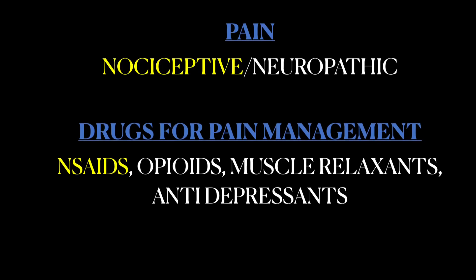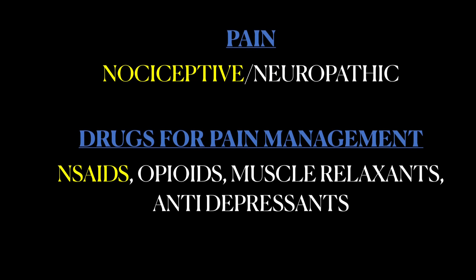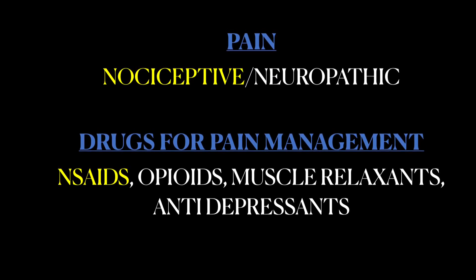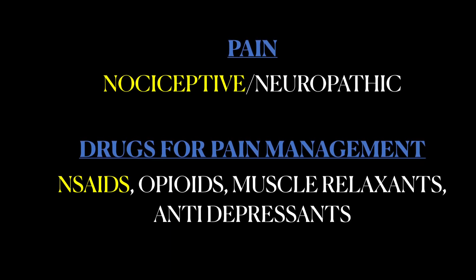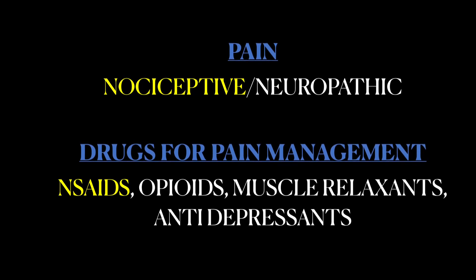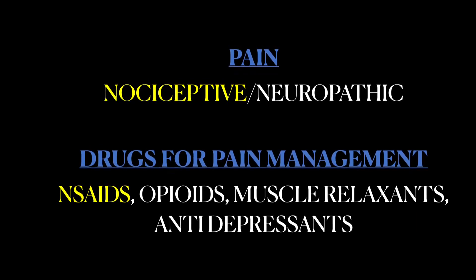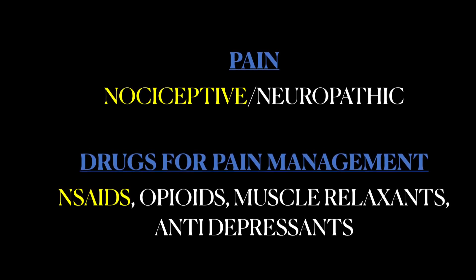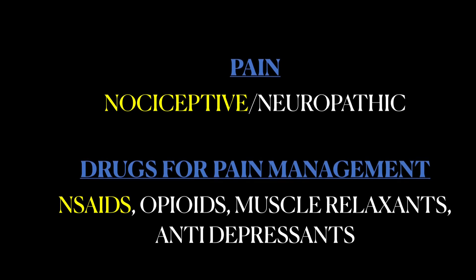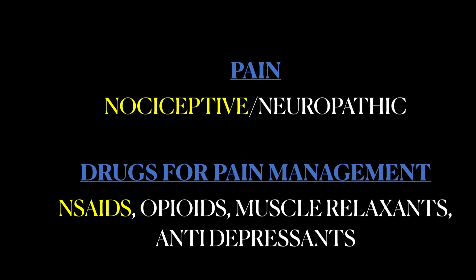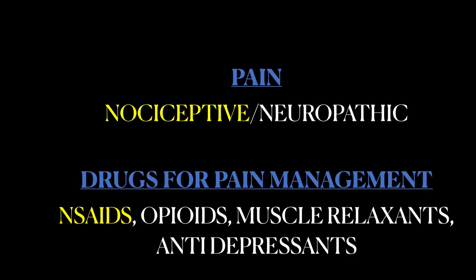Pain may be classified as nociceptive pain and neuropathic pain. Nociceptive pain is caused by tissue injury — pain of pulpal, periodontal origin, and pain due to ulcers are examples of nociceptive pain. Even though there are various groups of drugs like opioids, muscle relaxants, and antidepressants for pain management, they are more effective in neuropathic pain, that is pain due to a defect in the neural system. Whereas more than 90% of patients require NSAIDs, as their cause of pain would be of pulpal origin.